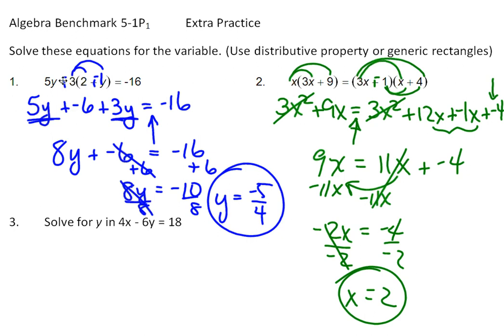And then for number 3. Number 3, you have two variables. And if I'm solving for one of the variables, there's no way I can get an answer, like a numerical answer, like a number like these. So your answer is going to have a letter in it, and that's fine. So solve for y. It's kind of like putting it in slope-intercept form for graphing lines.